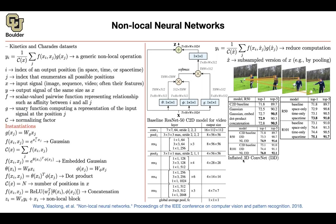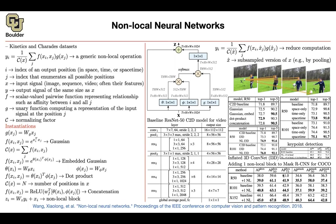We also learned about inflated 3D convolutions last session — you can add non-local blocks to I3D and compare it to the I3D baseline. You get a boost in performance. It's not only for videos: you can do it for keypoint detection or apply it to Mask R-CNN on the COCO dataset. So it's a block you can insert into multiple types of networks and usually get more accurate results.